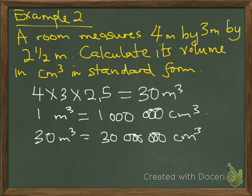In standard form we have 1, 2, 3, 4, 5, 6, 7 zeros. Therefore, it means 3 times 10 to the power 7 cubic centimeters. This will be our final answer.